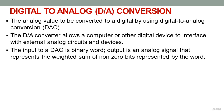Digital to analog conversion converts a digital value to an analog value. A digital to analog converter allows a computer or digital device to interface with external analog signals and devices. The input to the DAC is a binary word; the output is an analog signal representing the weighted sum of the non-zero bits represented by that word.